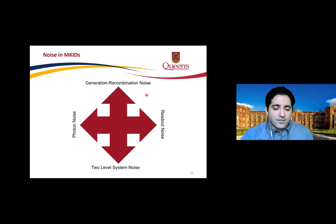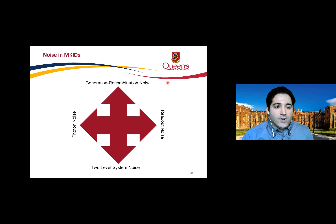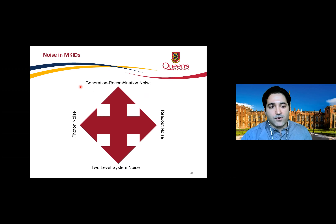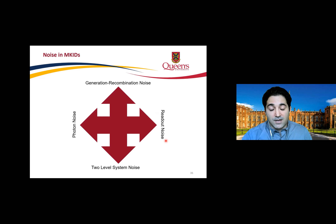Regarding noise in MKIDs and improving SNR: noise can come from electronics, transmission line, design, or external sources. Generation-recombination noise is related to the number of quasi-particles; external sources like magnetic fields can disturb quasi-particle population and produce this noise. Readout noise comes from the readout electronics, transmission line, and amplifier.